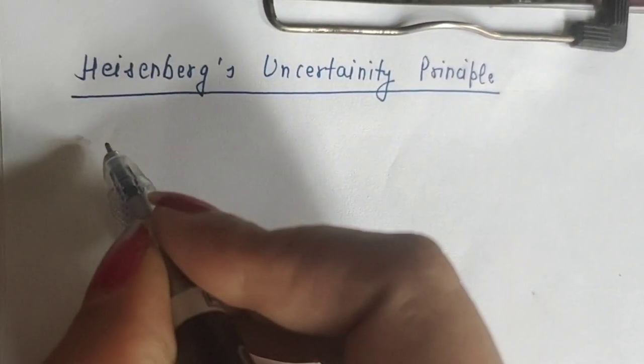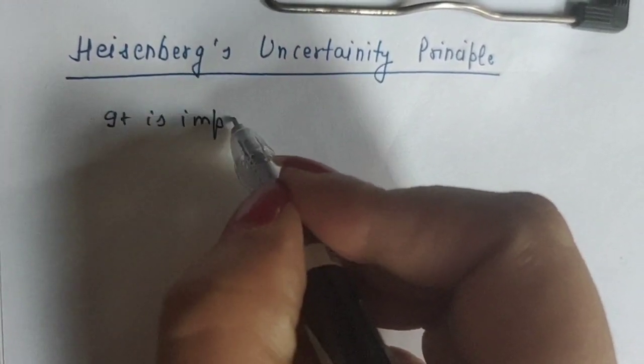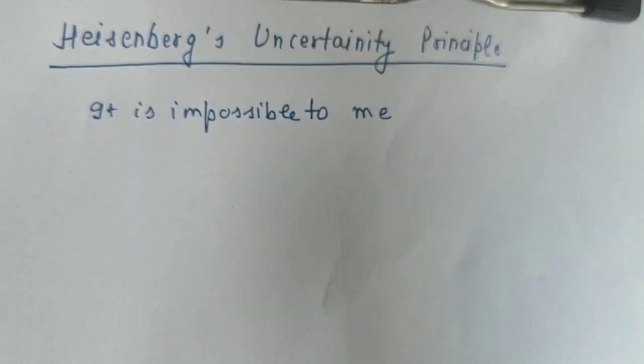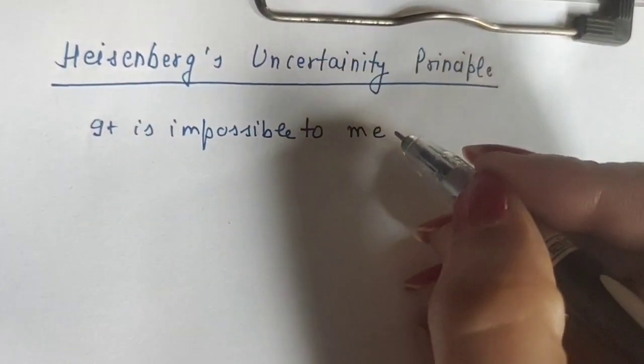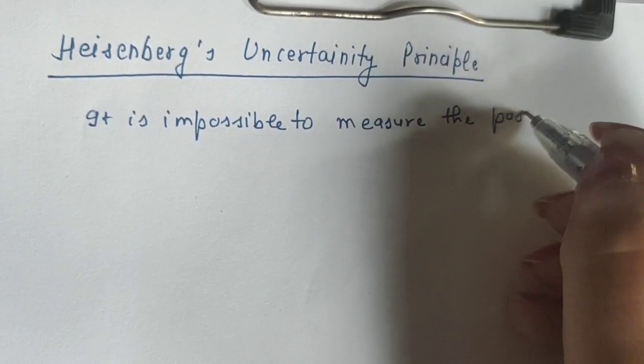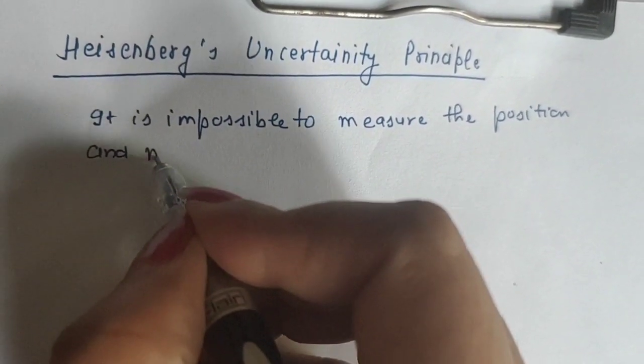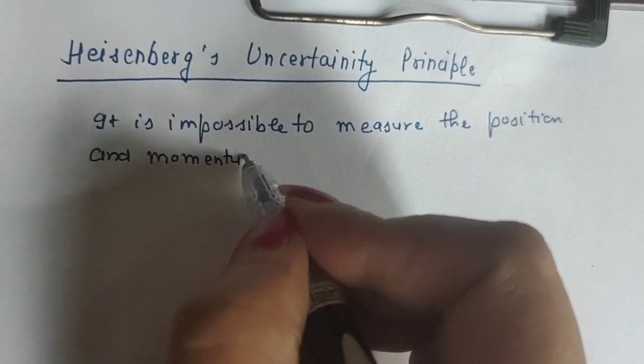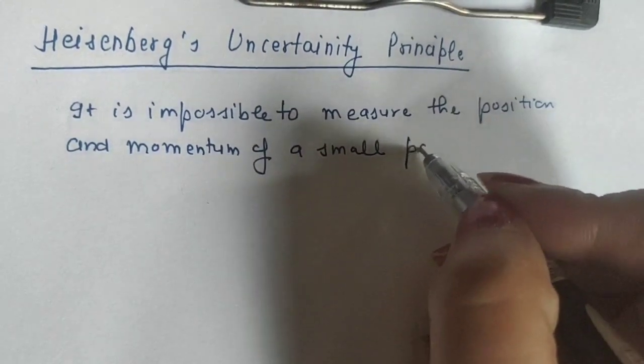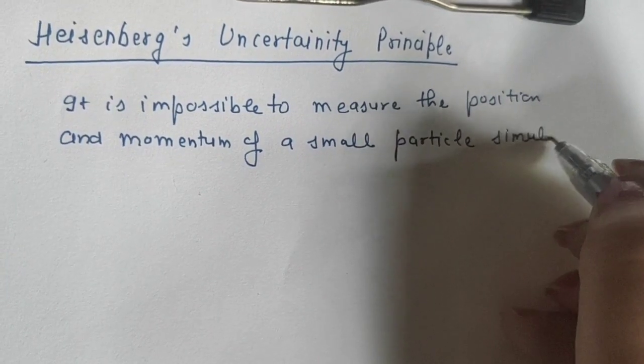According to this principle, it is impossible to measure the position and momentum of a small particle simultaneously.